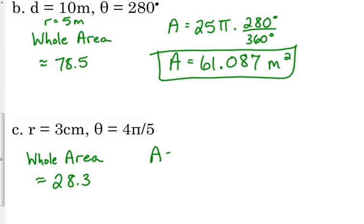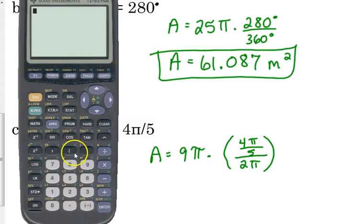So the area of our sector is 9 pi times. Now, you do have to be careful with parentheses here. 4 pi over 5 over 2 pi. So make sure that you pay attention to what I do when I type these in. 9 pi, you don't need parentheses around it. You can if you really want to, but you don't have to.